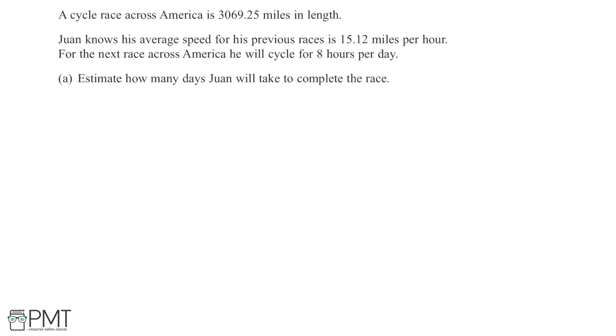Here we have that a cycle race across America is 3069.25 miles in length, and Juan knows his average speed for previous races is 15.12 miles per hour. We're told that for the next race across America he will cycle for eight hours per day, and we're asked to estimate, being the key word here, how many days Juan will take to complete the race.